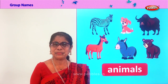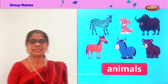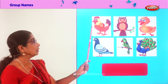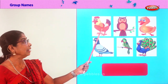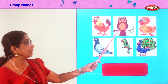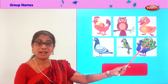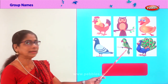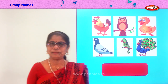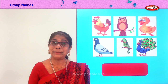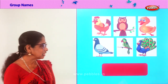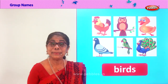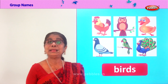Did you enjoy? Good. Let's look at another group of things and find the name. Here you have a hen, an owl, duck, peacock, parrot, pigeon. What is the group name for these? Birds! Very good. Spell birds: B-I-R-D-S. The group name for this is birds.